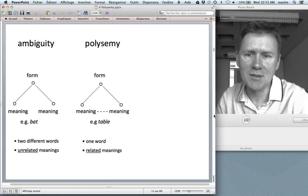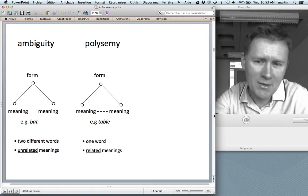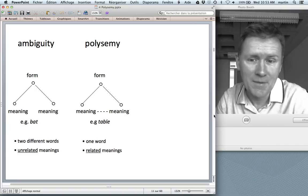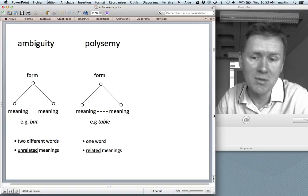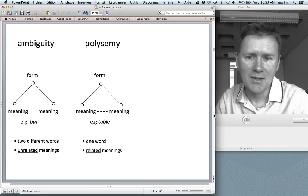And then you have polysemy, in which the diagram looks almost the same, but you see the dotted line between the two meanings. The meanings are related. So that, for instance, table is a single word with several related meanings.